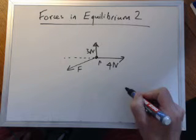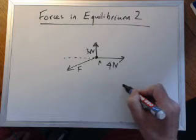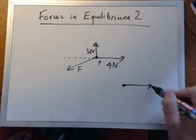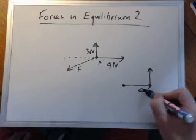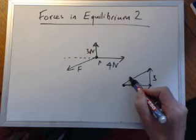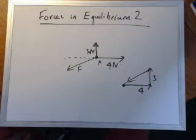So, you take here, you go along 4 in the horizontal, up 3 in the vertical, and then this F would be that one there. Now, we could use Pythagoras to find that.